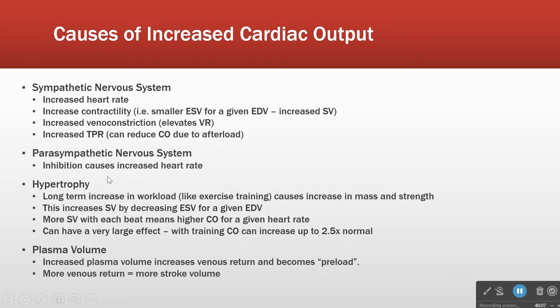When we inhibit the parasympathetic nervous system, heart rate goes up. Hypertrophy — if I make your heart work harder for a long time, such as giving you high blood pressure or making you very tall, that long-term increase in workload increases the mass and strength, and works to increase stroke volume by making ESV smaller.